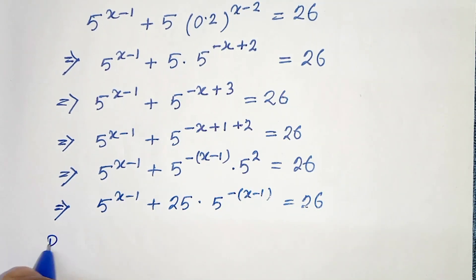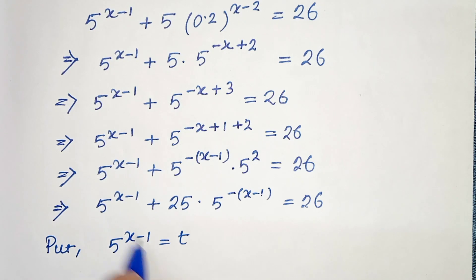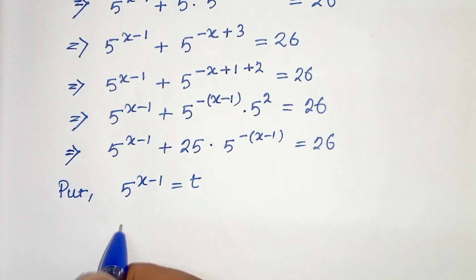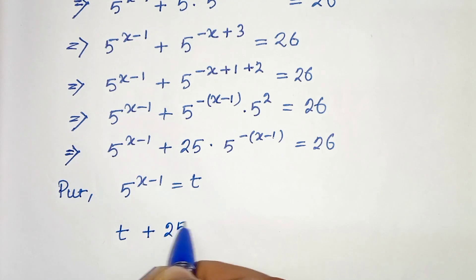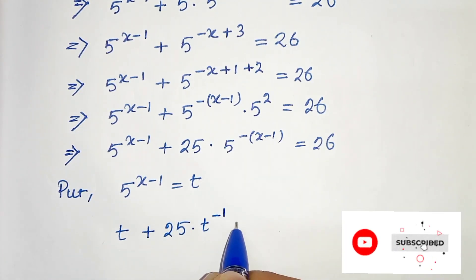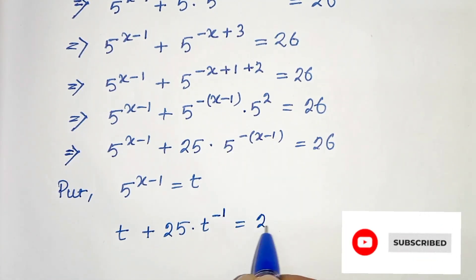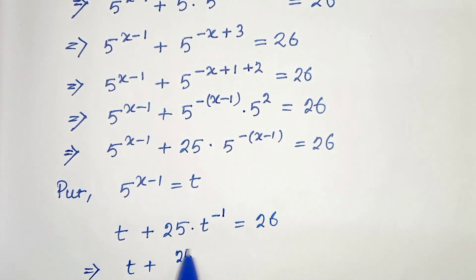Now let's put 5 to the power x minus 1 equals to t. So from this we will get t plus 25 times t to the power minus 1 equals to 26, which is t plus 25 by t equals to 26.